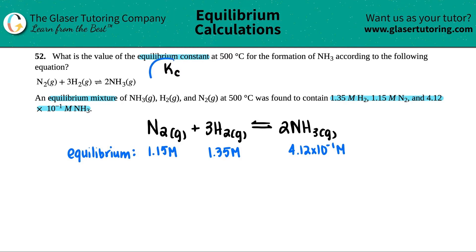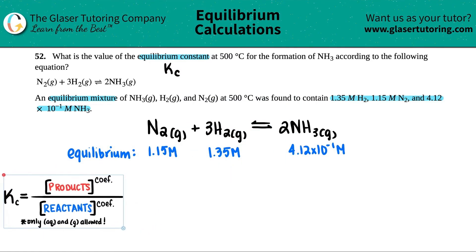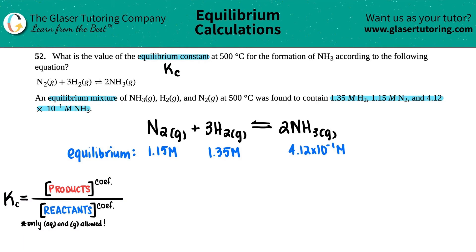So now remember, in order to find a KC, there's only one formula. It's that products divided by reactants formula. It's this one right here. So I'm just going to put this over here. And we just need to make a specific one for this case. Remember, products divided by reactants, only aqueous and gases are allowed. These are all gases, so we're good. Let's write out that KC formula.